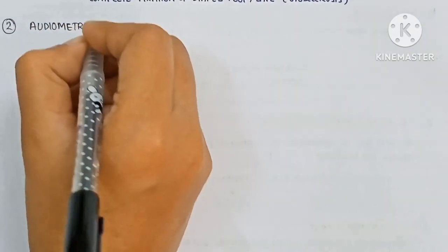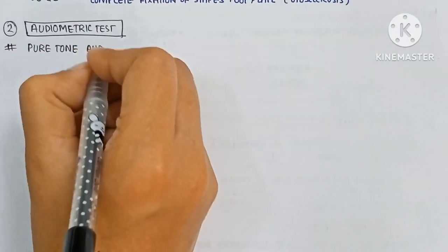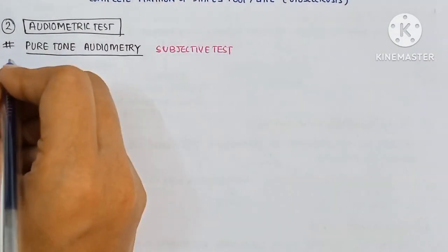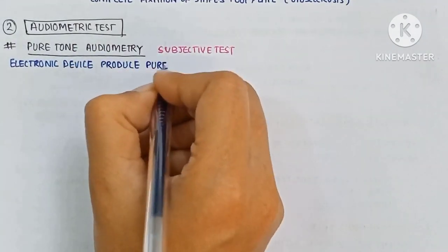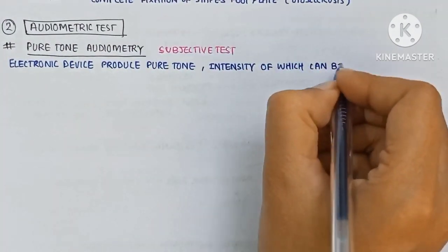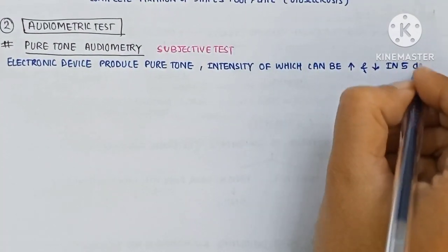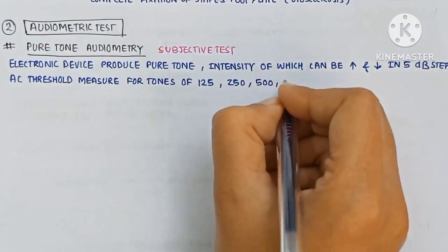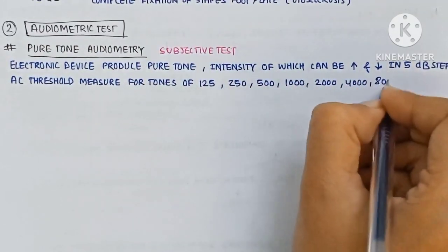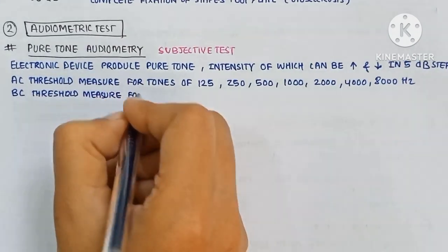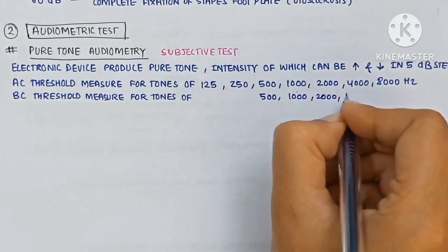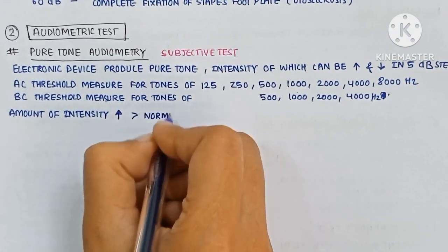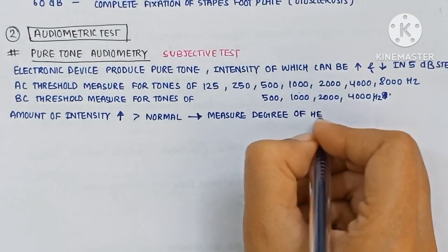First is the pure tone audiometry. It is a subjective test. It is an electronic device that produces pure tones, the intensity of which can be increased or decreased in 5 decibel steps. The AC threshold is measured for tones of 125, 250, 500, 1000, 4000, and 8000 Hz. The BC threshold is measured for tones of 500, 1k, 2k, and 4k.